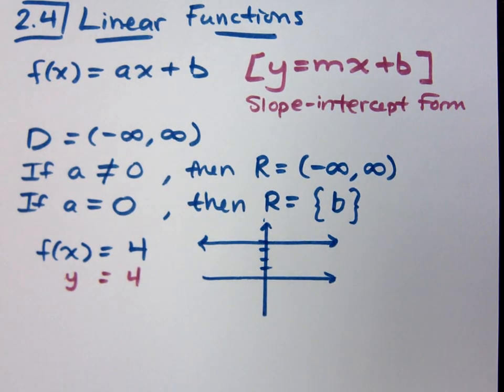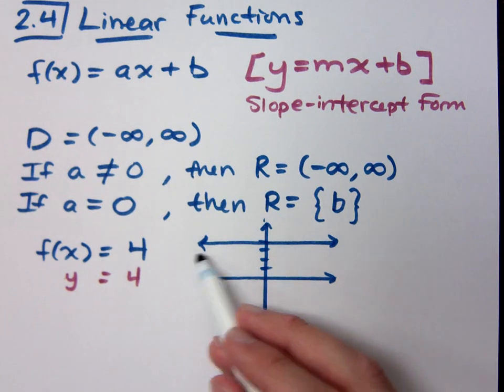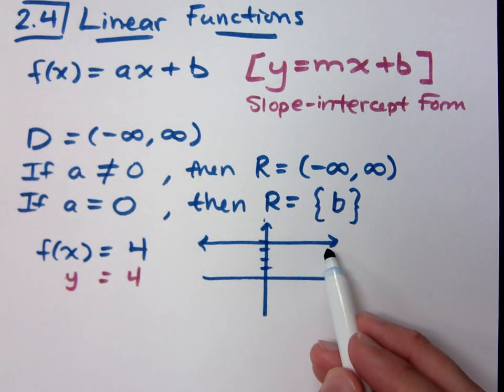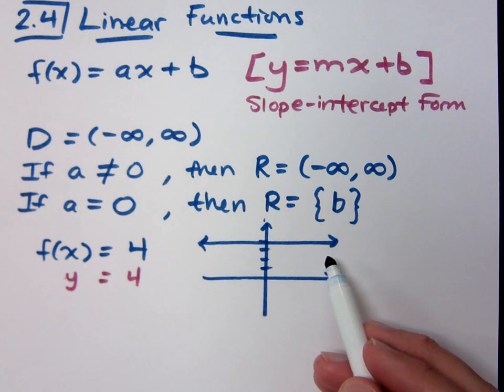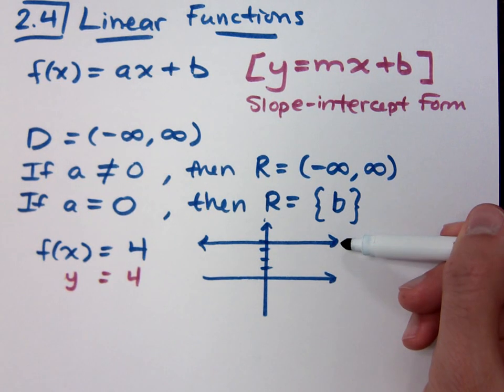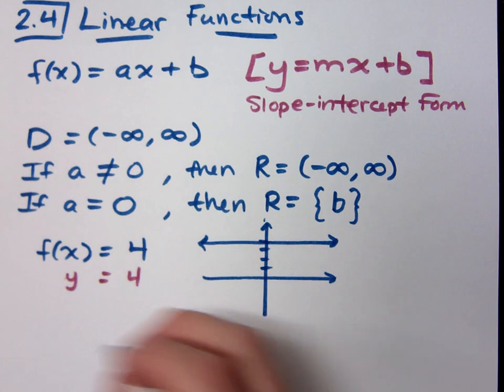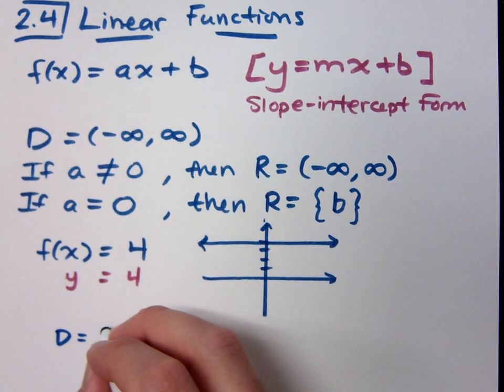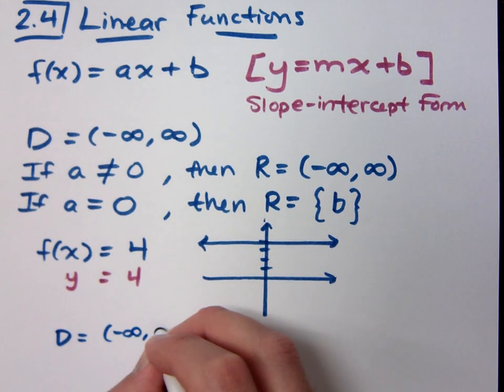What's the domain in this picture? What do you see? The domain is the set of x's that are used, which is all real numbers, right? However, the range—the y values that are used in this picture—is just 4, and only 4. So if I had to write that out here, the domain is all real numbers.